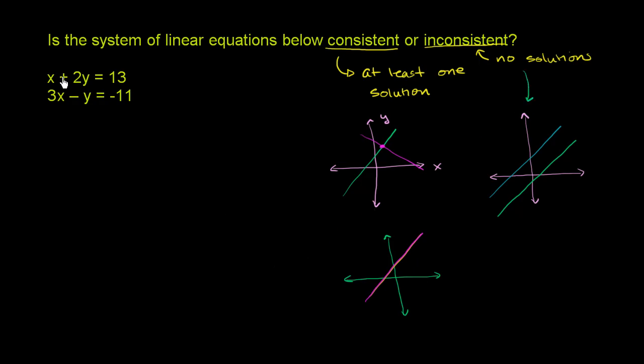So what we could do is just do a rough graph of both of these lines and see if they intersect. Another way to do it is you could look at the slope, and if they have the same slope and different y-intercepts, then you'd also have an inconsistent system. But let's just graph them. So let me draw my x-axis, and let me draw my y-axis. So this is x, and then this is y.